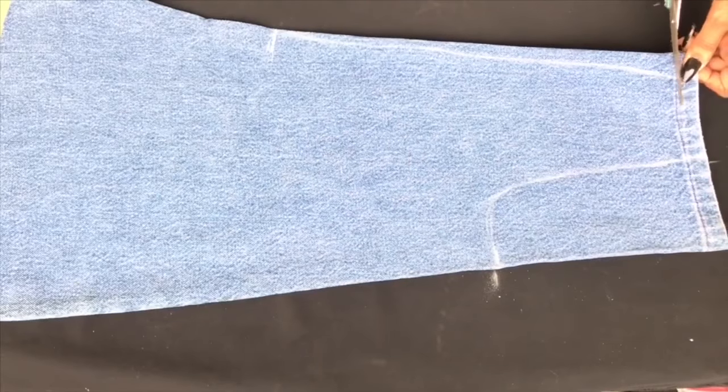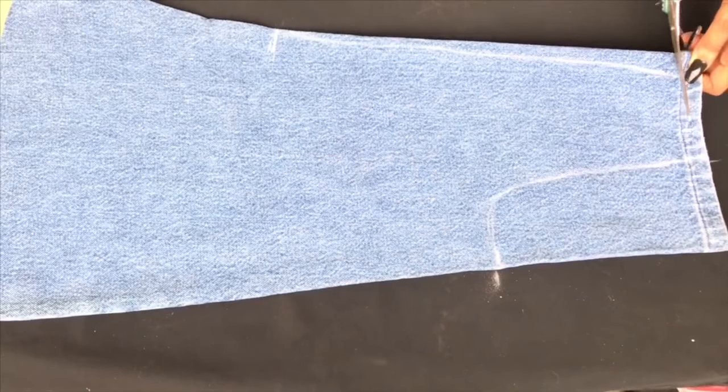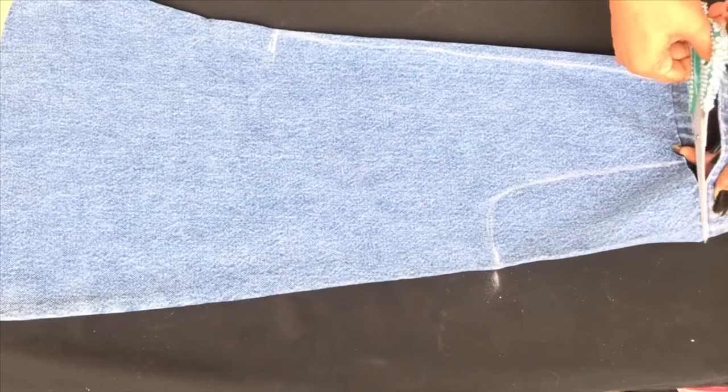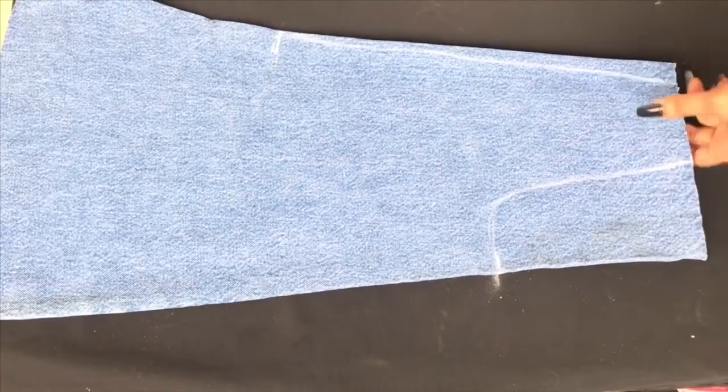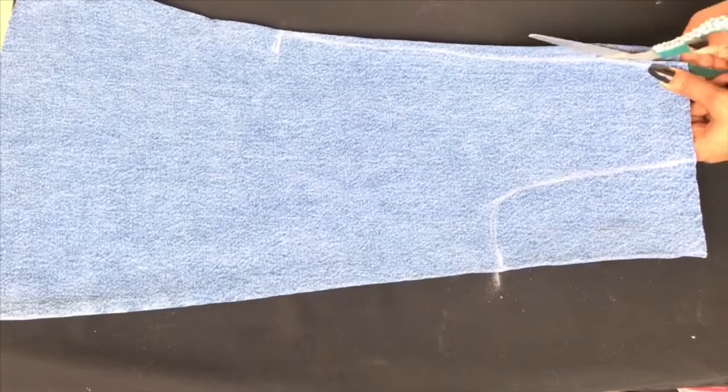You can either decide to trim off the hem like I'm doing, or you leave it the way it is. But I wanted a more frayed look, so I had to trim it off. When you're done with that, open the side from where you have the armhole.